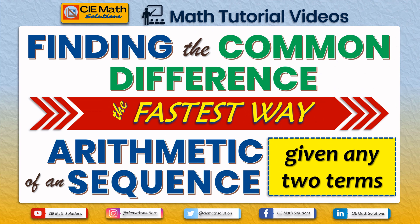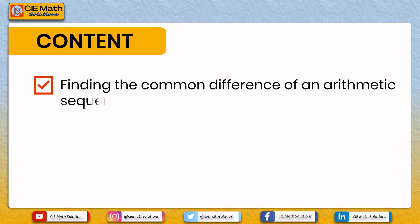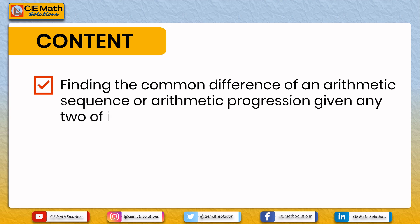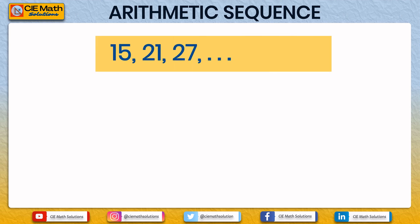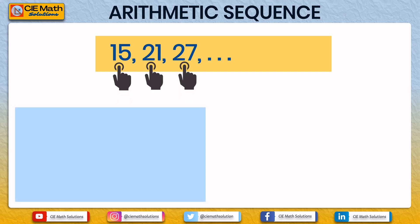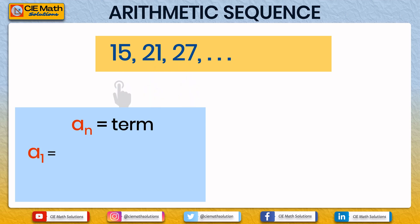In this video we will focus on the fastest way of finding the common difference of an arithmetic sequence or progression given any two of its terms. But before we proceed, let us have a quick recall of the prerequisite concepts. For a given arithmetic sequence, the terms 15, 21, and 27 are denoted by A-n.